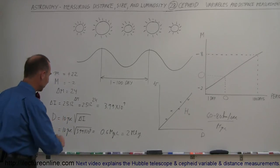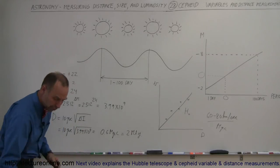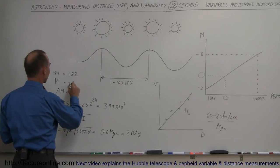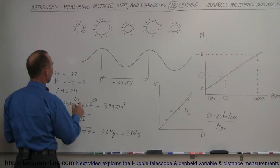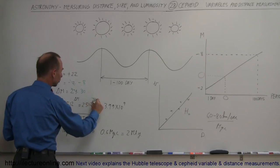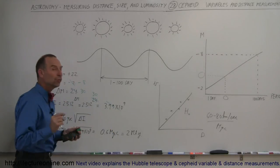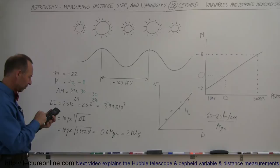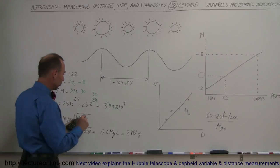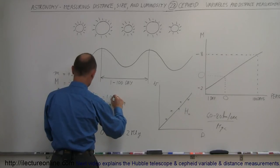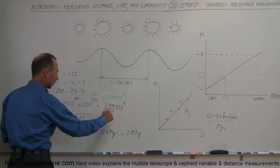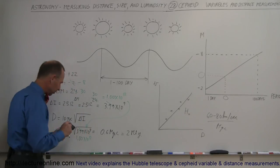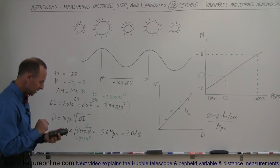What about the very bright Cepheid variables — those with an absolute magnitude of minus 8? Instead of a delta m of 24, we now have a delta m of 30. So we calculate 2.512 raised to the 30th power, which equals 1.00 times 10 to the 12th. We then plug that value in: 10 parsecs times the square root of 1.00 times 10 to the 12th.